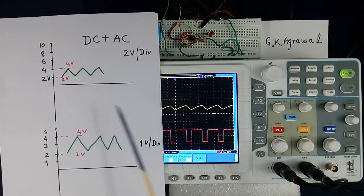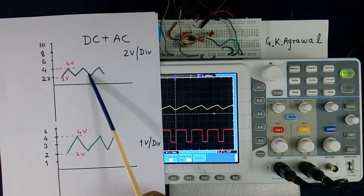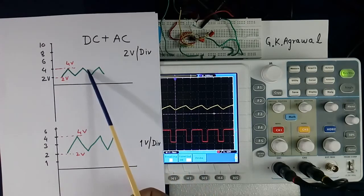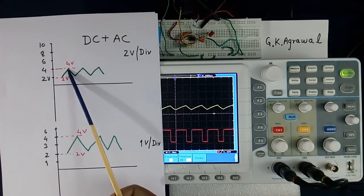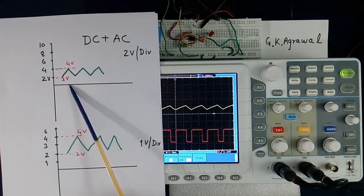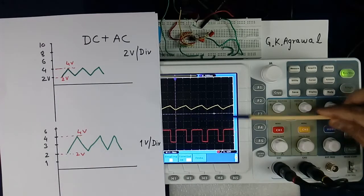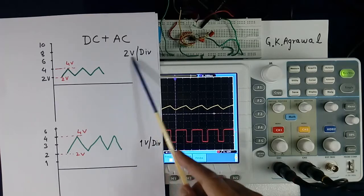Now suppose one signal is like this. This yellow one I am showing here. This is DC value and AC value both, and this is zero line, and scale is 2 volt per division.